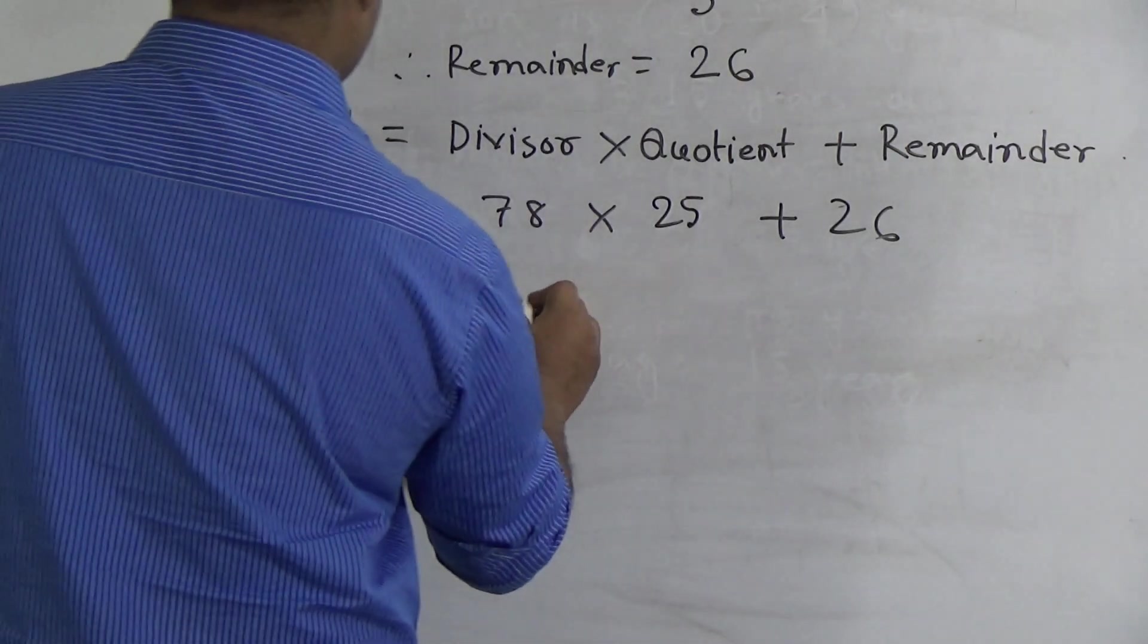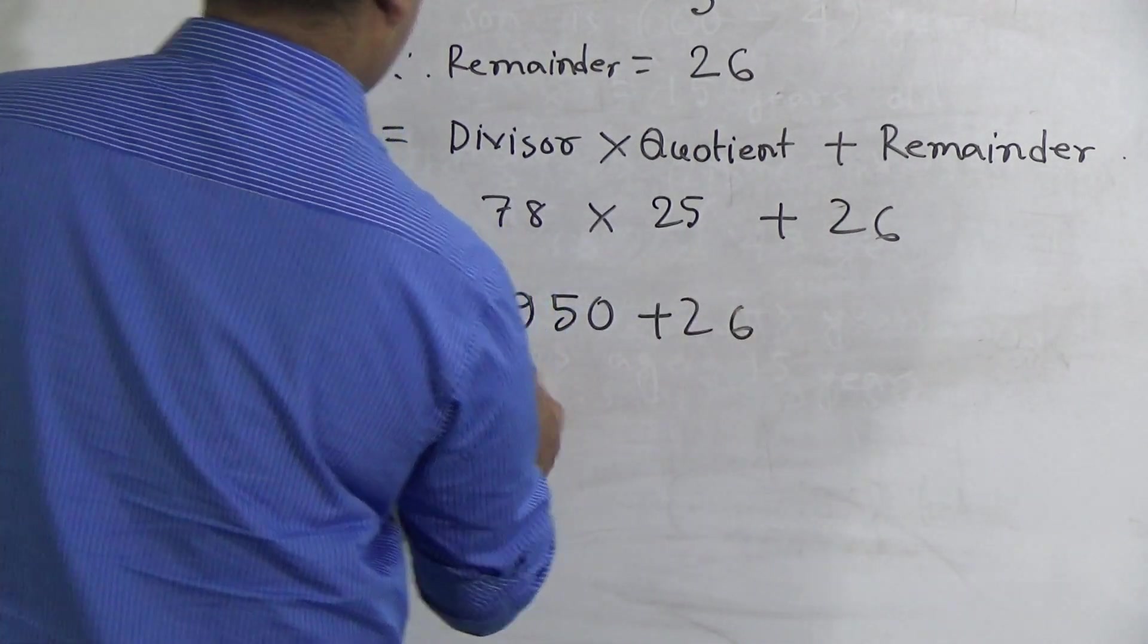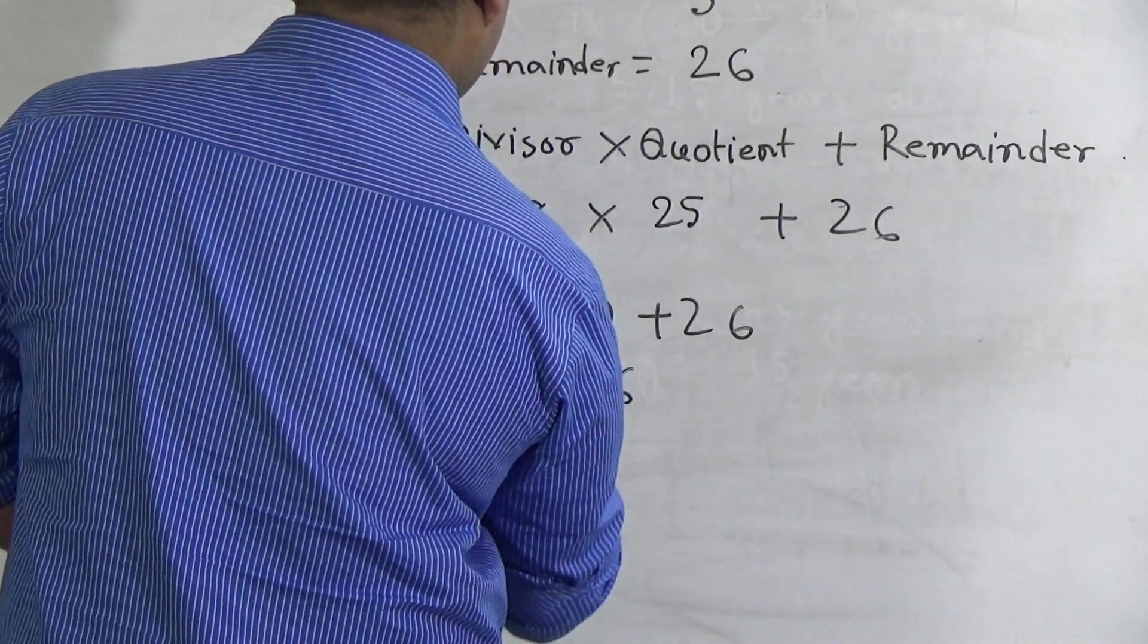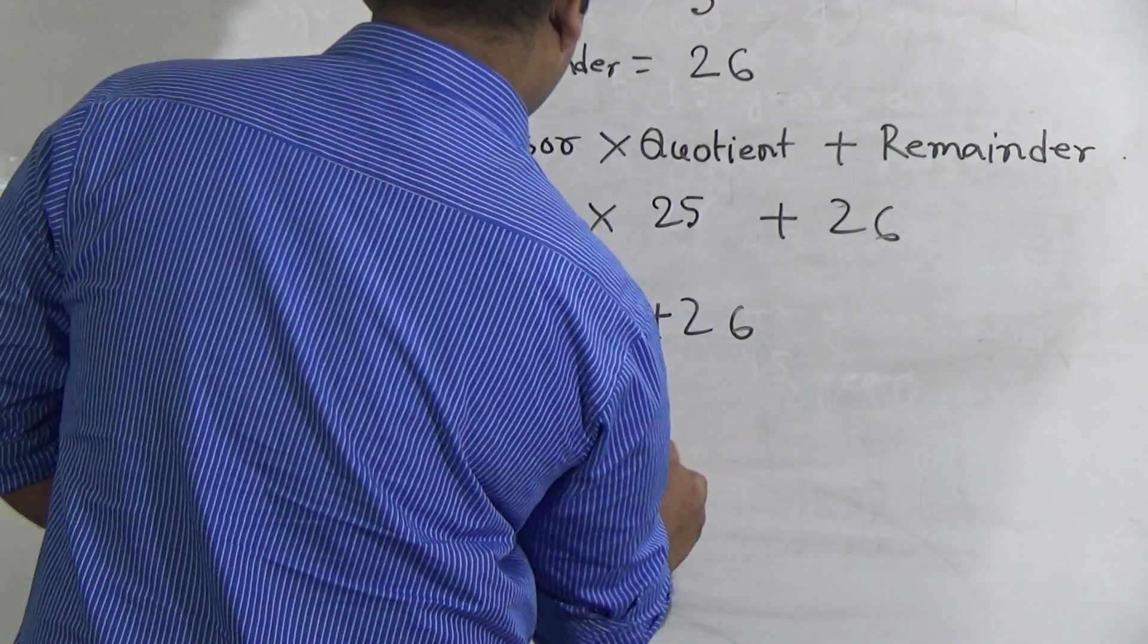So here we write 1950 plus 26. So here we add 6, 7, 9 and 1. So this is the answer, 1976.